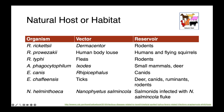Rickettsia prowazekii is vectored by the human body louse, and its primary reservoirs are humans and flying squirrels. Rickettsia typhi is vectored by fleas with a primary reservoir of rodents. Anaplasma phagocytophilum is vectored by Ixodes ticks, and its reservoirs are small mammals and deer. Ehrlichia canis is vectored by Rhipicephalus ticks, and its main reservoir is dogs. Ehrlichia chaffeensis is also vectored by ticks and found in a wider variety of reservoir species — deer, canids, ruminants, and rodents. Finally, Neorickettsia helminthoeca is vectored by Nanophyetus salmincola, which is actually a fluke, and its reservoir is salmonid fish infected with the fluke.